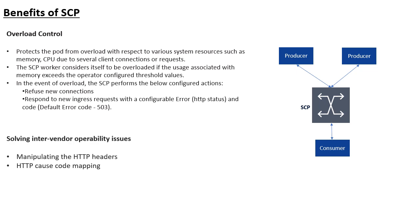Another benefit of SCP is inter-vendor interoperability. For example, if you have a producer from one vendor and a consumer from another vendor, the producer may send an error code that the consumer cannot process. SCP, sitting in between, can fix that interoperability issue and map that cause code to one that is understood by the consumer. It has the capability to manipulate HTTP headers and cause codes — similar to DRA, which used to perform AVP mapping and manipulation. So these are a few benefits of having SCP in the network.